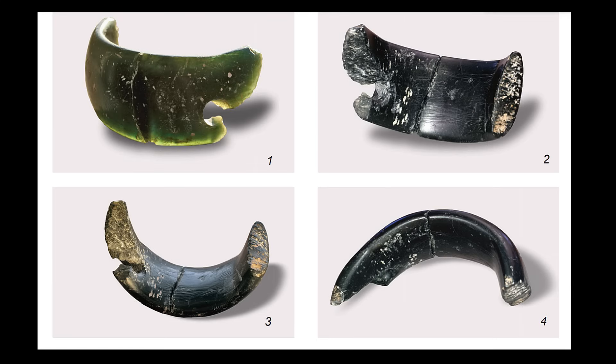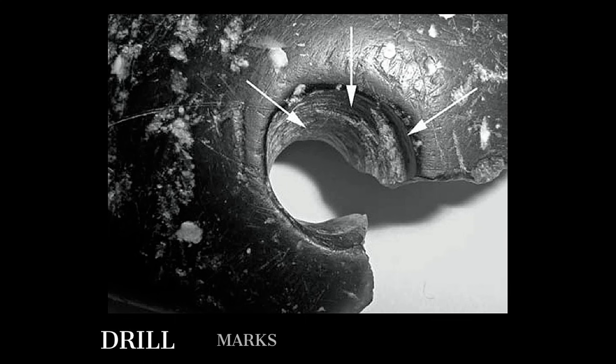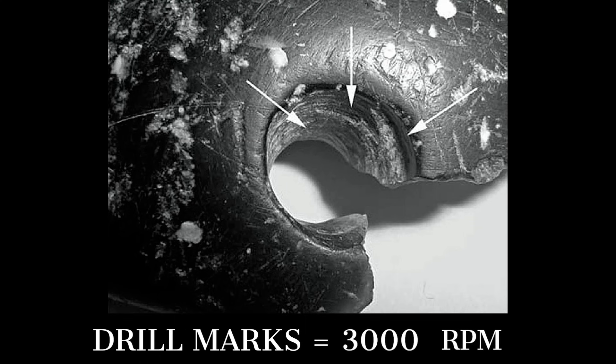Additionally, the hole drilled into the bracelet, which likely secured a string or fastening mechanism, shows signs of repeated stress. This suggests the bracelet may have been fastened and unfastened frequently, hinting at its importance to the wearer.